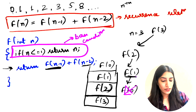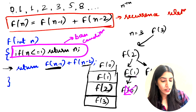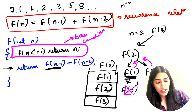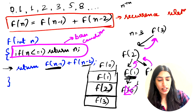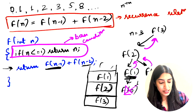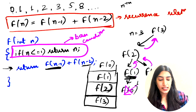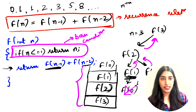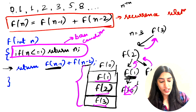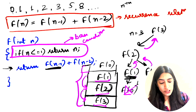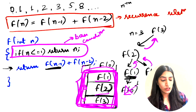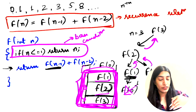From F(1) we return 1, and from F(0) we return 0. So F(2) gets the values 1 and 0, adds them, and returns 1. As we return, the stack starts getting deallocated. Now notice the size of the stack: we had F(3), F(2), F(1) allocated — so the maximum depth was 3, which for a general n equals order of n. That's our space complexity.